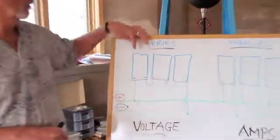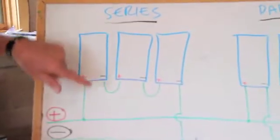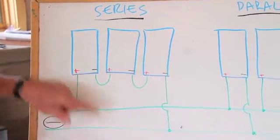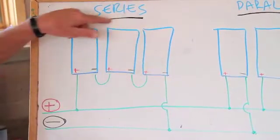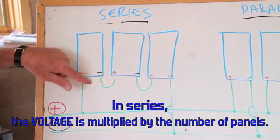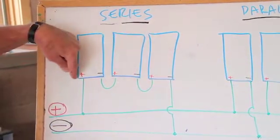In this particular array here, it's a series connection, which means that the electricity goes through one panel, then through another panel, and then it goes out. So all three are connected together. That's called series, and the voltage multiplies. So if you start with a 12-volt panel, you multiply times 3 times 12, you have 36 volts.